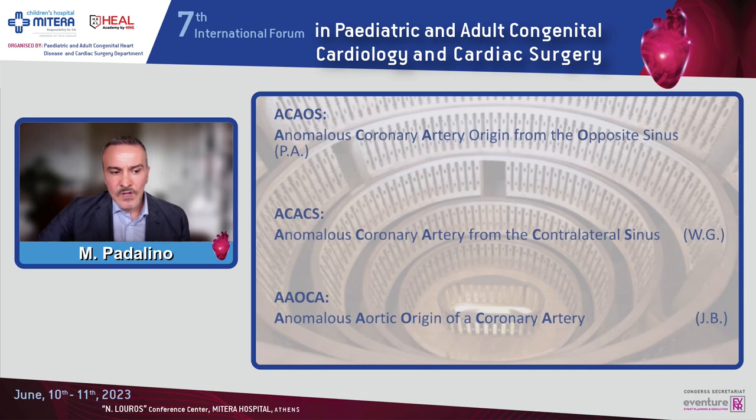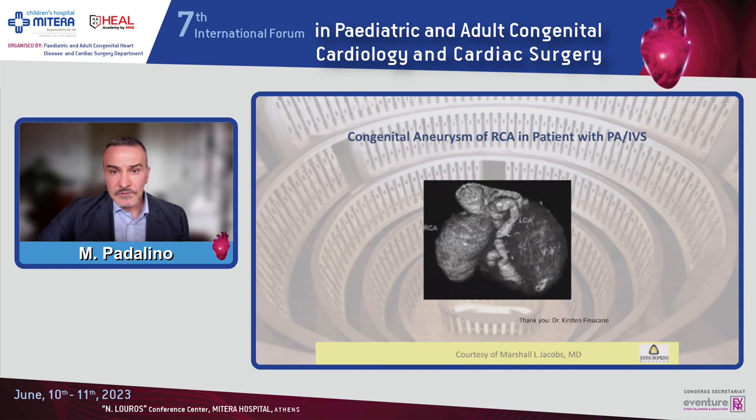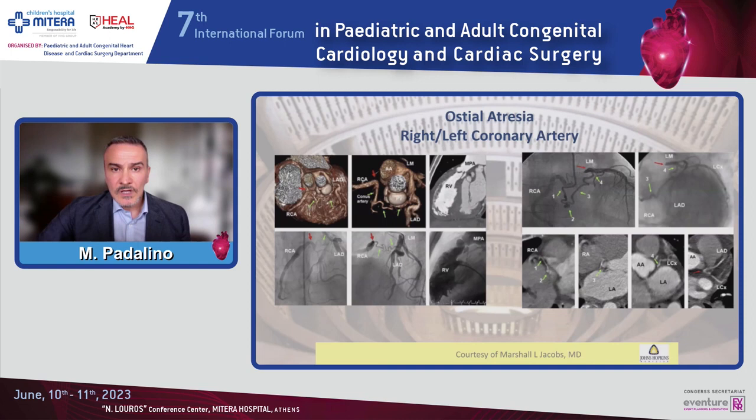What is not included? The anomalous origin of coronary artery from the pulmonary artery is not included in this category. We do not refer to coronary artery to RV fistula or aneurysm of the right coronary artery in patients with pulmonary atresia and intact ventricular septum. We do not refer to myocardial bridge, which is another anatomical entity that must be considered differently. And we do not talk about ostial atresia, which can affect either the right or the left coronary artery.